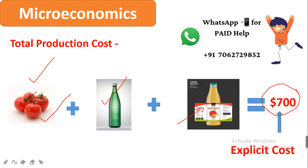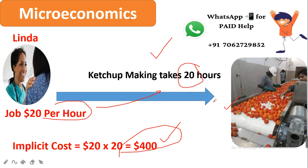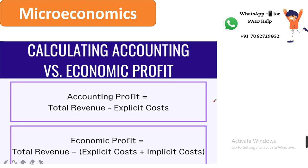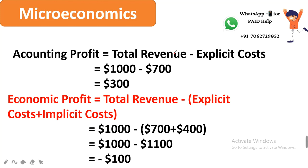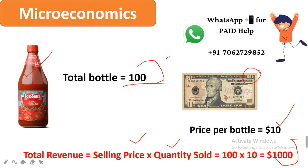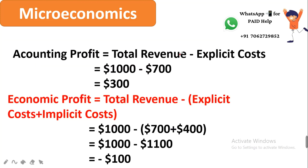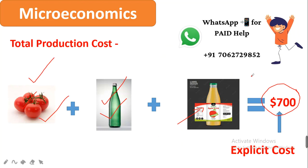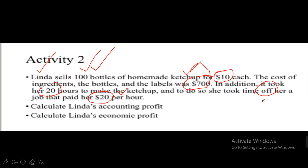To summarize: explicit cost is the cost of raw materials, bottles, and labels — things clearly visible. Implicit cost is the profit foregone, which is $400. For accounting profit, the formula is total revenue minus explicit cost: $1,000 minus $700 equals $300. The accounting profit is $300.